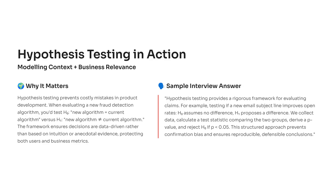Then you run an experiment on real transaction data. After analyzing the results, you get a p-value — say it's 0.03. That means there's only a 3% chance these results happened by luck. So you'd reject the null hypothesis and conclude the new model truly improves fraud detection accuracy.